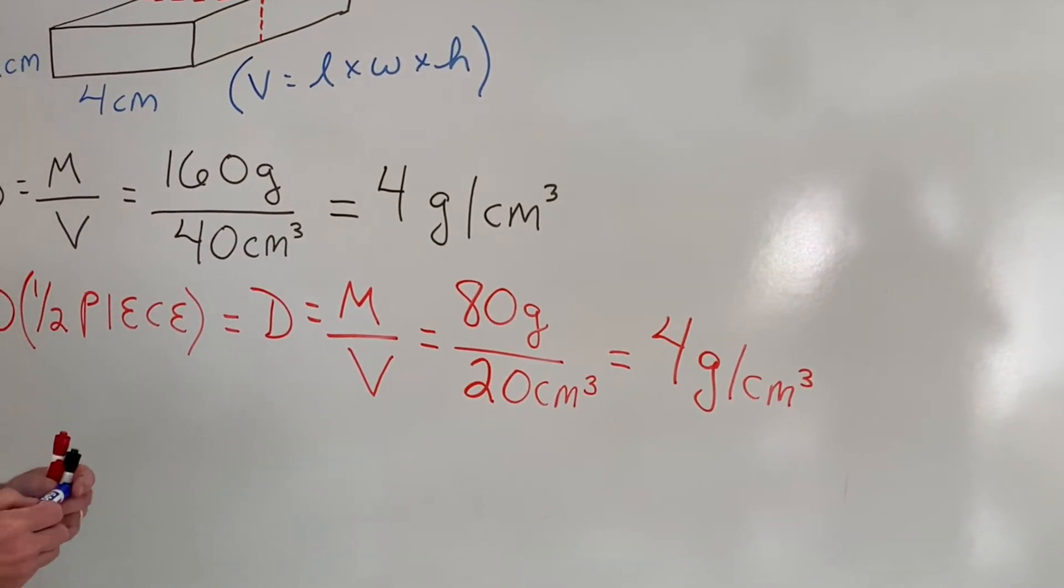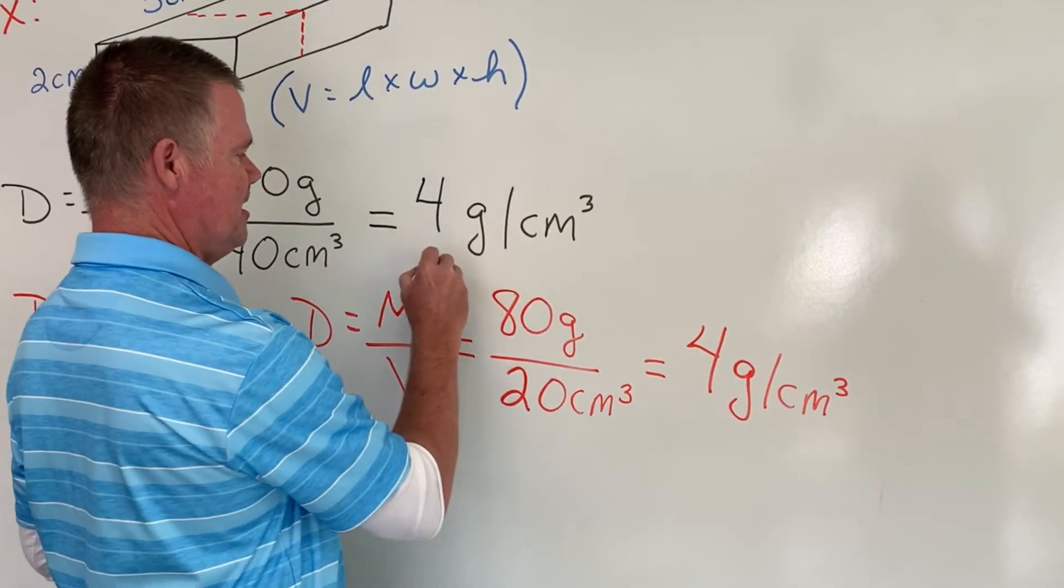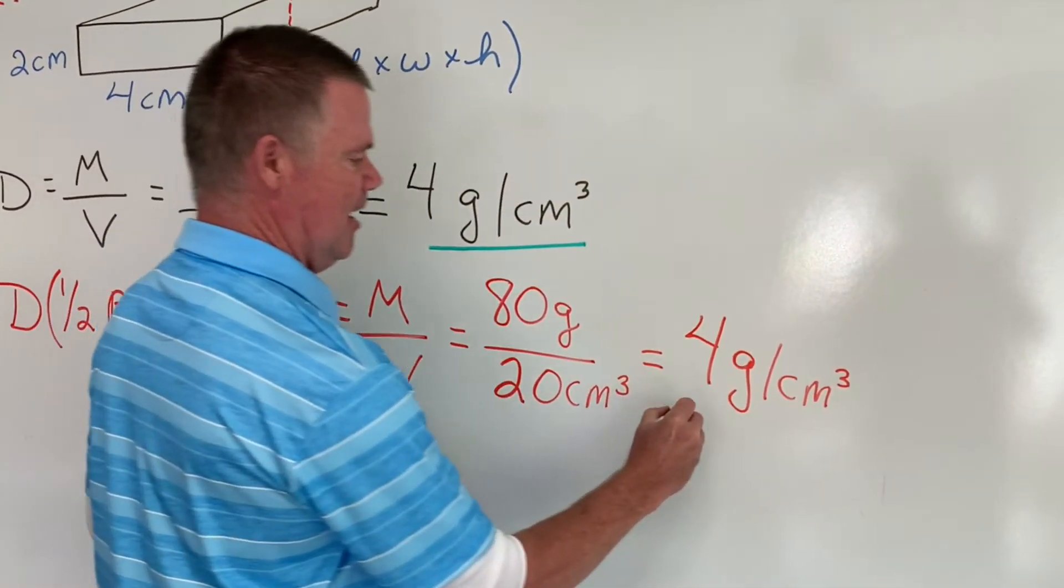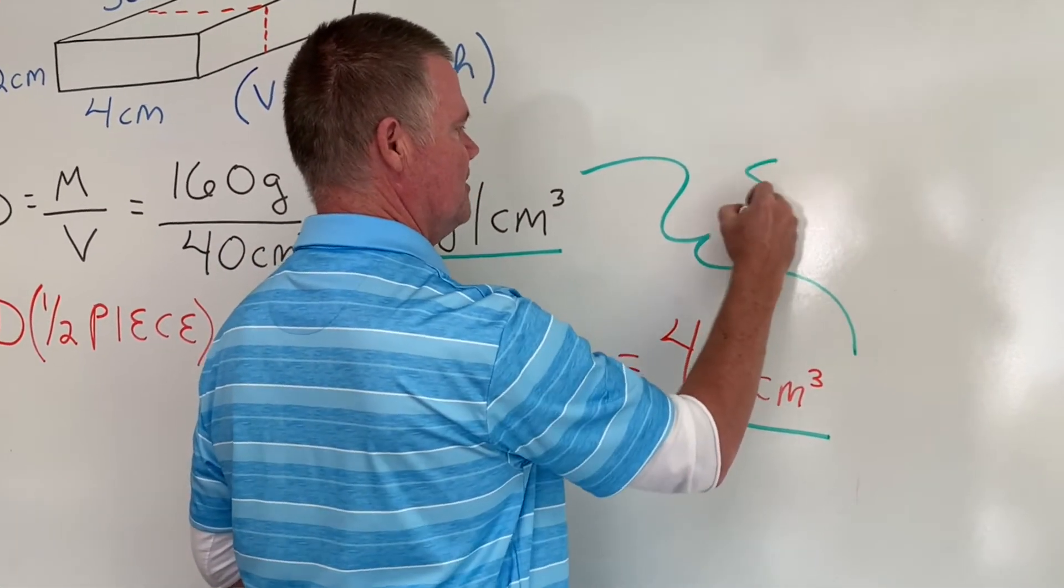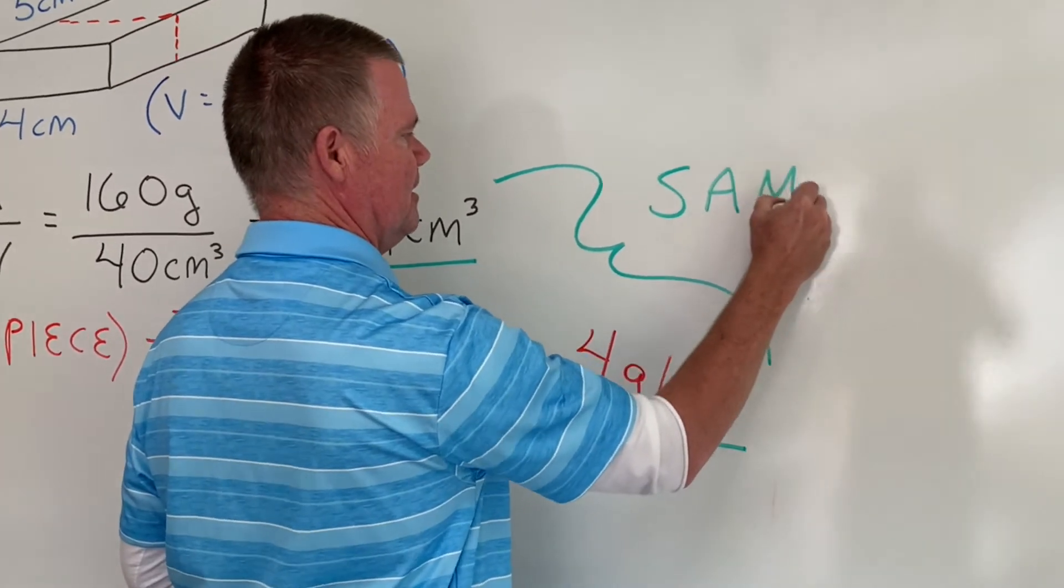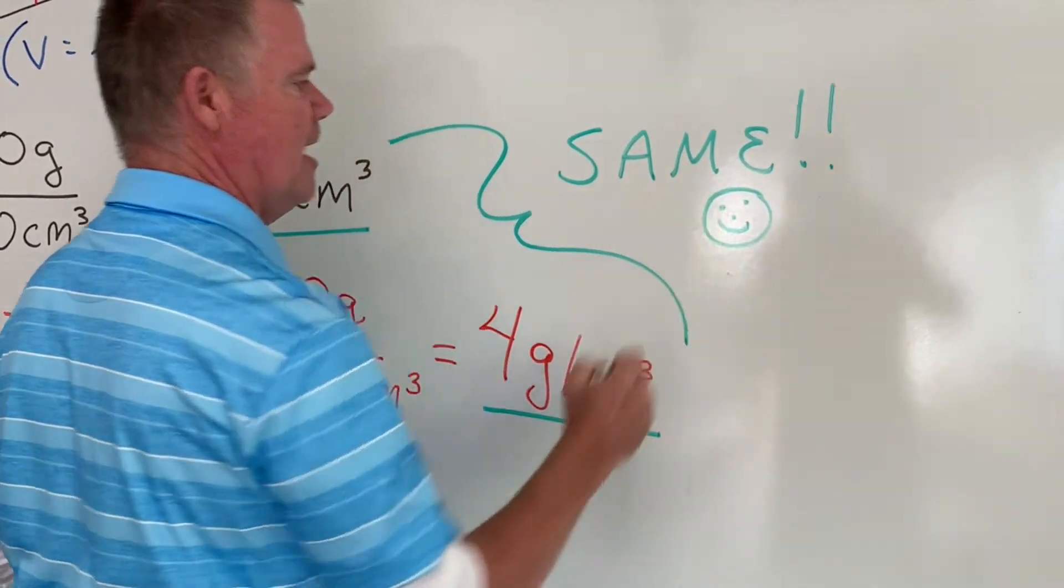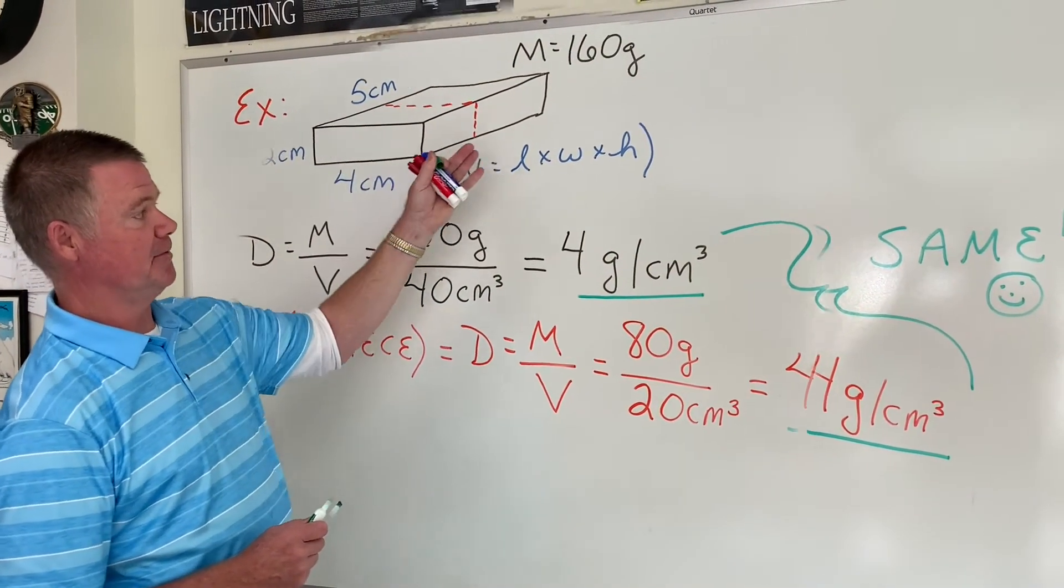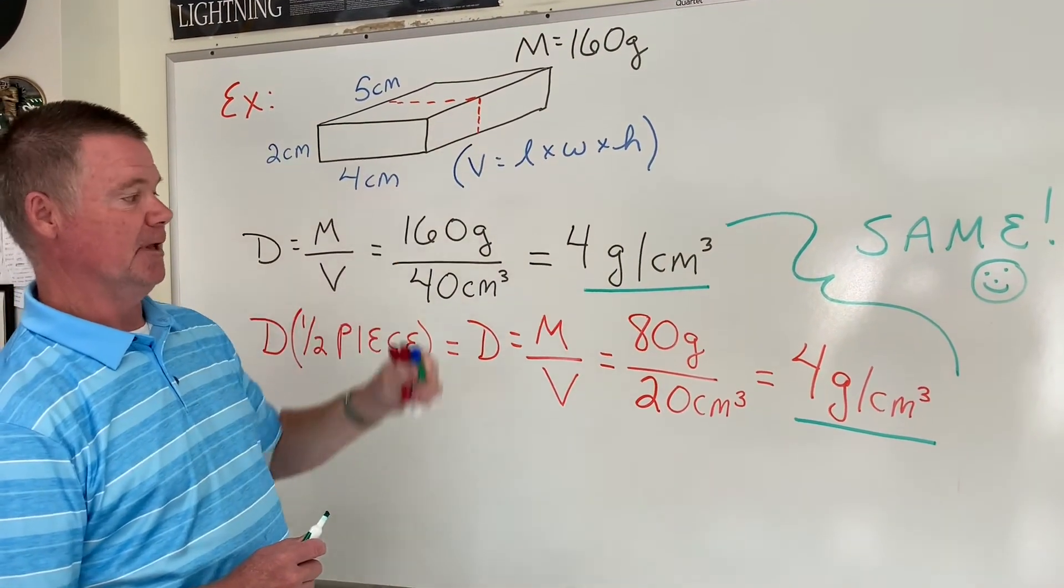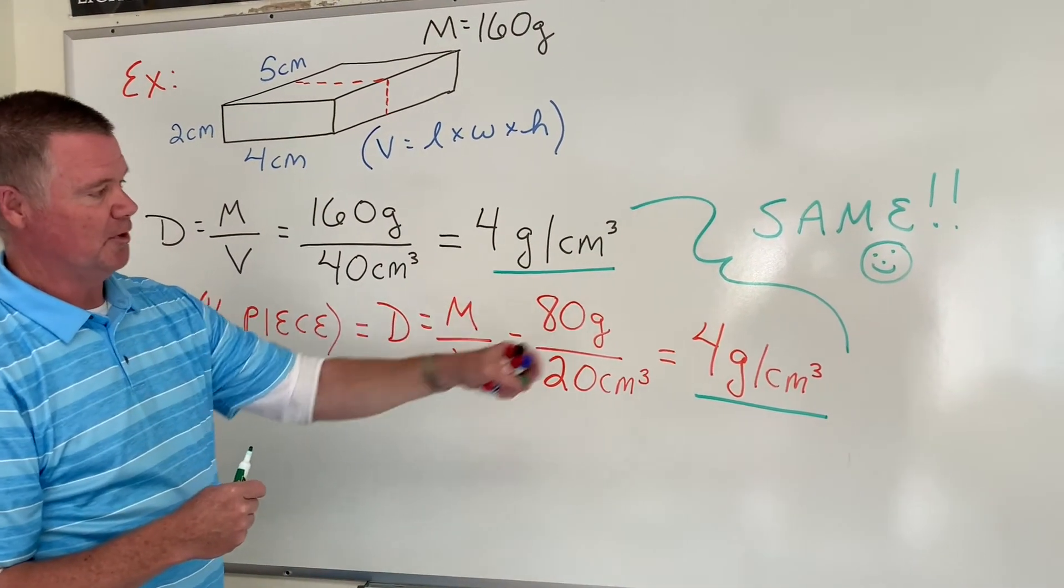And that's where some of us might be surprised. So what did we just figure out? One thing, getting density from a whiteboard world, from a diagram. The other is by cutting this in half, we came up with the same density.